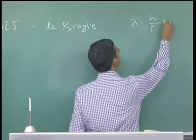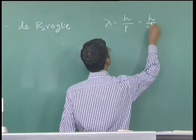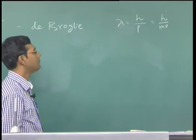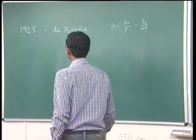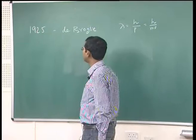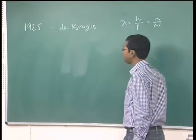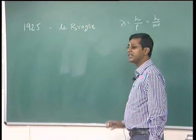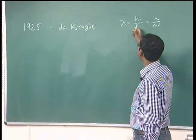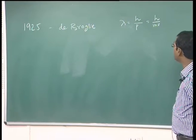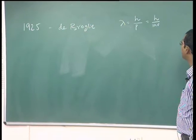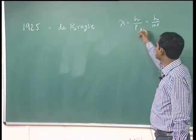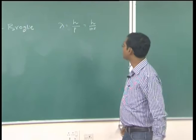We can write λ = H/(m·v), where m is the mass of the electron and v is the velocity of the electron. So it all started with the discovery by de Broglie in 1925, when he stated that electrons can be considered as a wave with a wavelength given by λ = H/P, where H is the Planck's constant and P is the momentum of the electron.